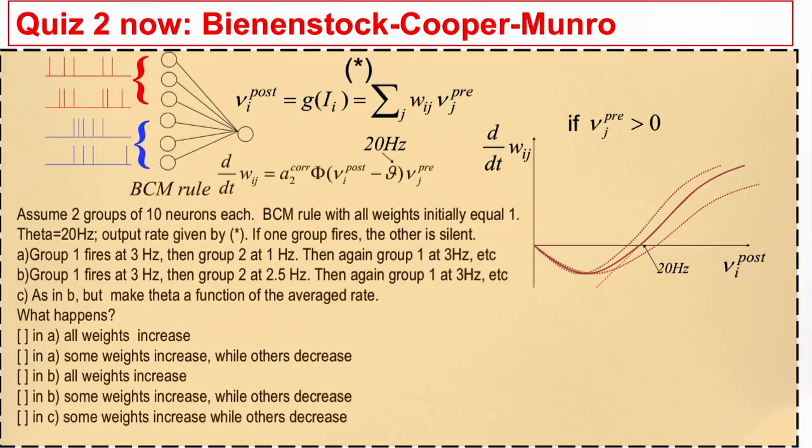So before you go on with videos please take some time and look at this quiz. The idea is exactly the kind of paradigm I discussed. There's one receiving neuron which gets input from two different groups the red group and the blue group and if the red group is active the blue group is inactive. If the blue group is active the red group is inactive. And they fire at different rates. And so the question is what happens? Do we see a development of receptive fields?